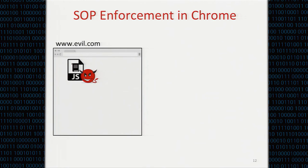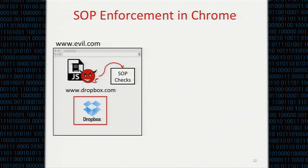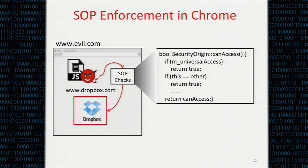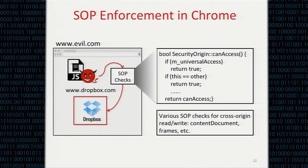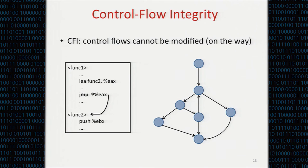How does Chrome implement SOP? When a malicious website loads a benign site, say Dropbox, into an iframe and tries to access the iframe, it will encounter SOP checks. Once the SOP checks pass, it can continue accessing; otherwise, the access will be blocked. We analyzed the source code of Chromium and found that these SOP checks are determined by security functions like the canAccess function, which controls whether a site can access another iframe or not. Similarly, there are various SOP checks for cross-origin writes, like contentDocument and frames. These checks are the hurdles for the attacker to bypass SOP.